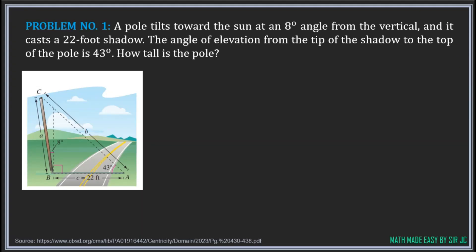Let's start with the first problem. A pole tilts toward the sun at an 8-degree angle from the vertical and it casts a 22-foot shadow. The angle of elevation from the tip of the shadow to the top of the pole is 43 degrees. How tall is the pole?